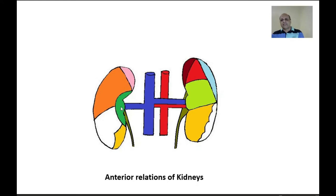The yellow area represents the jejunum — after the duodenum comes the jejunum, which is related to both kidneys. The duodenum is on the right side. On the left side, the organs related anteriorly are the stomach, the spleen, and the pancreas, which lies within the C-shaped duodenum. A line drawn from the lower end of the hilum to approximately the center of the lateral border, joined together, demarcates a triangular red area for the stomach. The blue area is for the spleen and the light green area is for the pancreas.